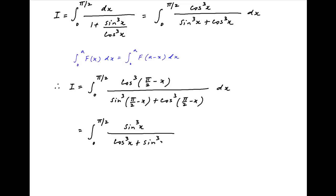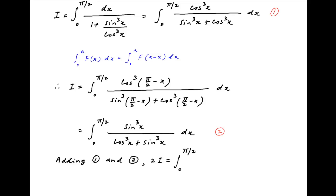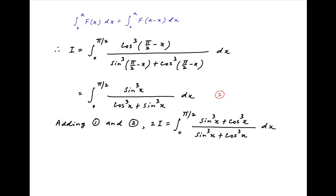Therefore the value of I is also equal to integral 0 to π/2 of sin cube x divided by cos cube x plus sin cube x. Adding results 1 and 2 noted above, we get on the left hand side 2I, equal to integral 0 to π/2 of (sin cube x plus cos cube x) in the numerator and (sin cube x plus cos cube x) in the denominator as well. The numerator and denominator are identical and they cancel.